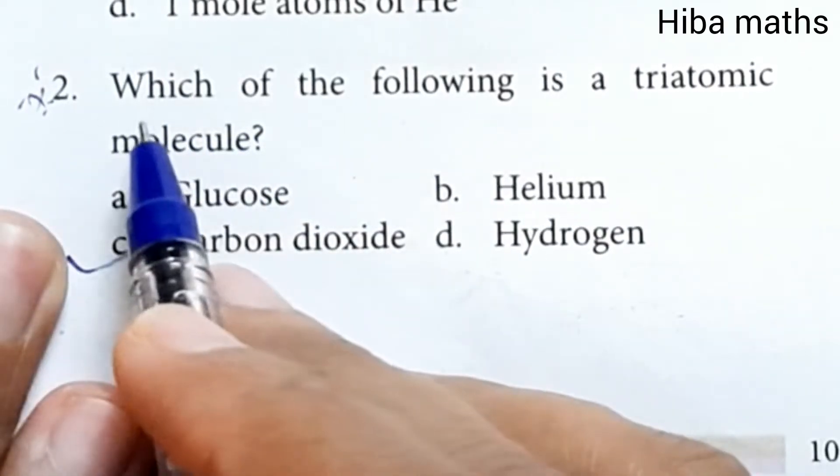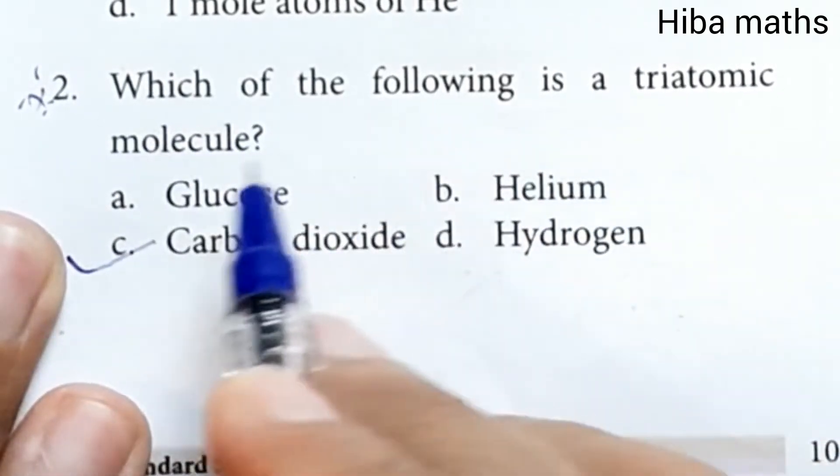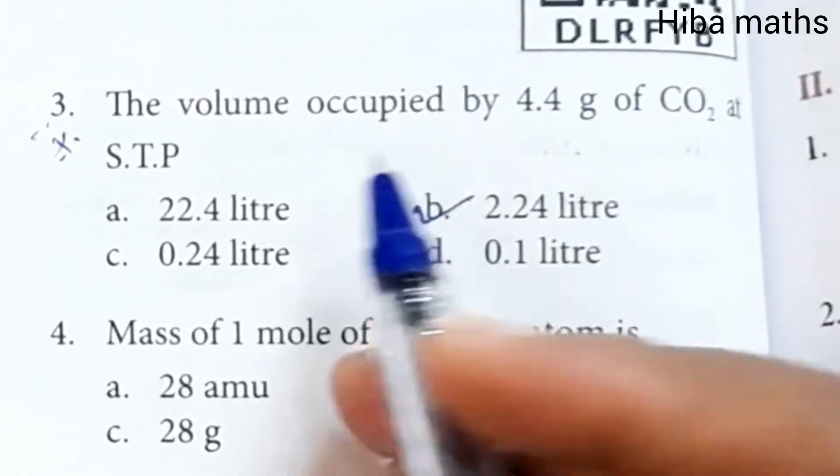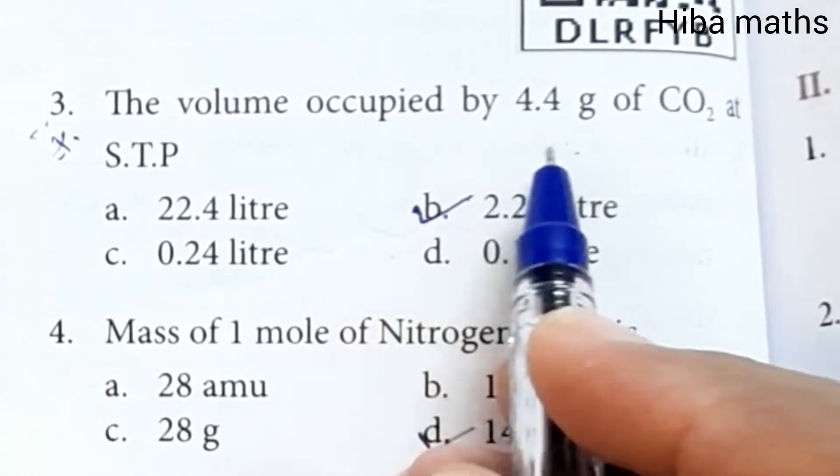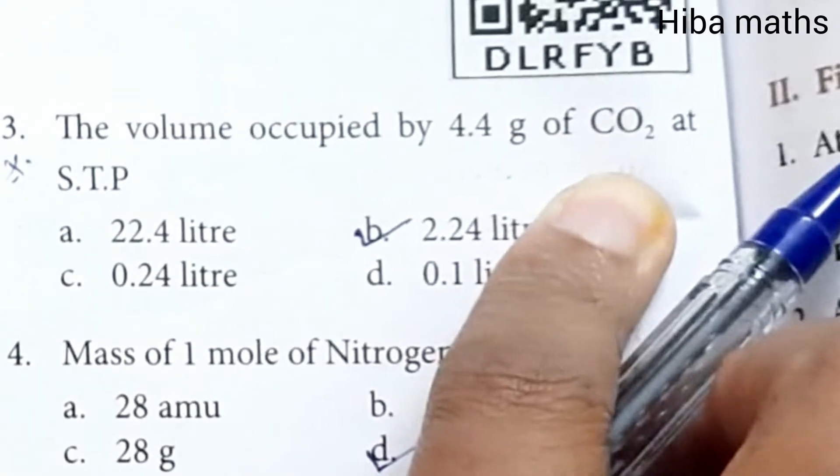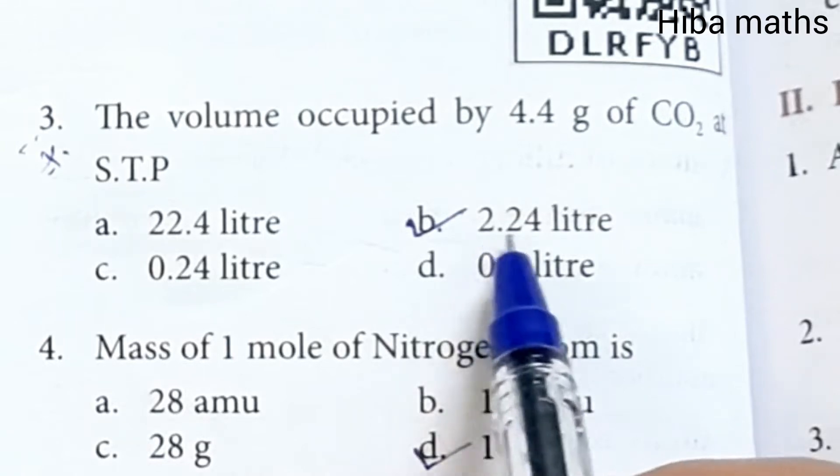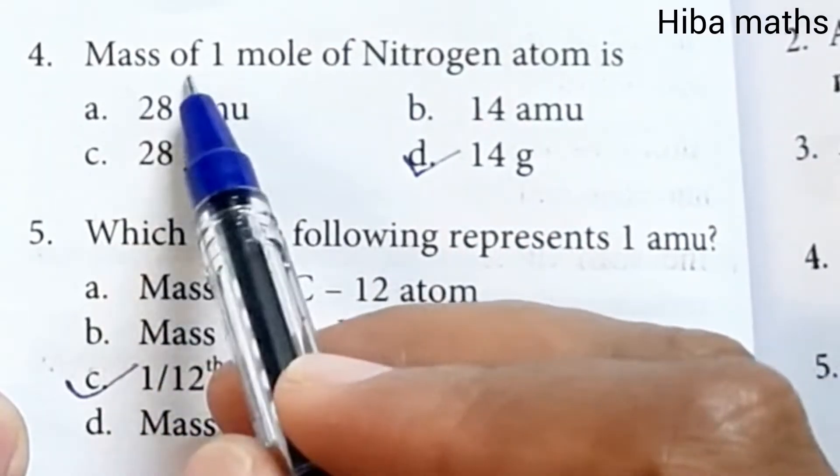Second important question: Which of the following is a triatomic molecule? Carbon dioxide. Third important question: The volume occupied by 1.4 grams of CO2 at STP (standard temperature and pressure) is 2.24 liters.